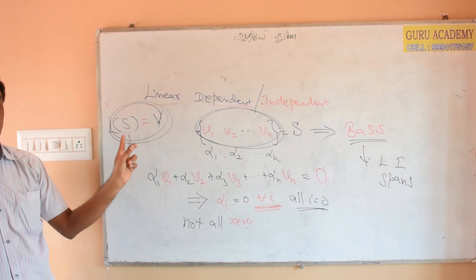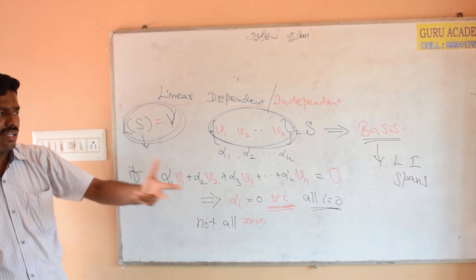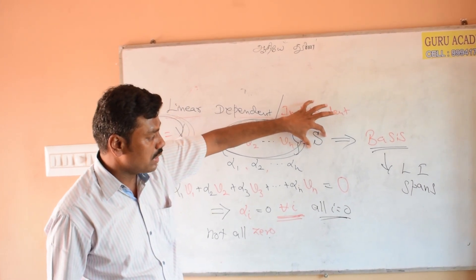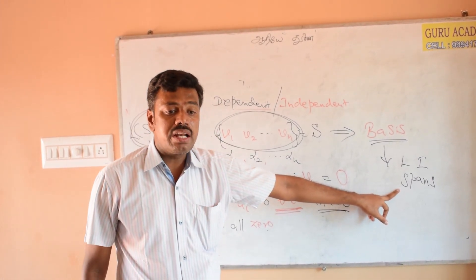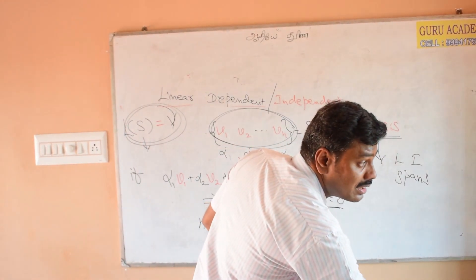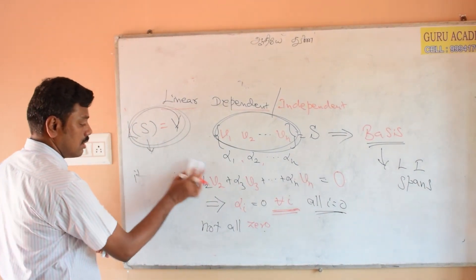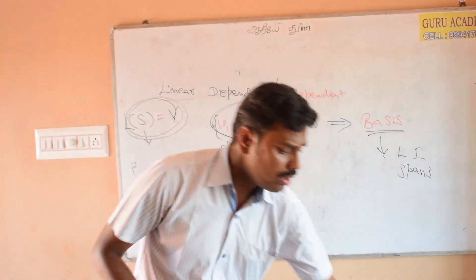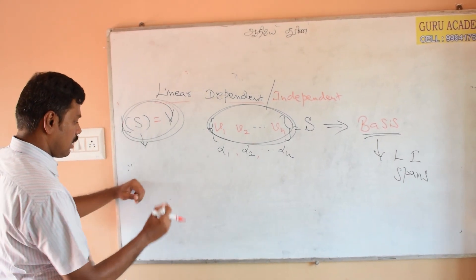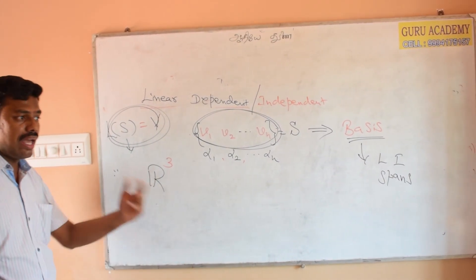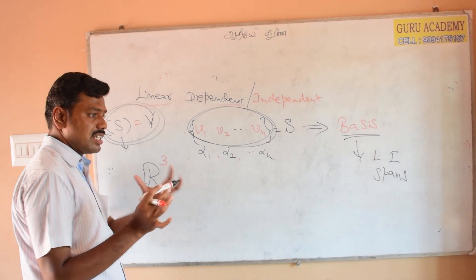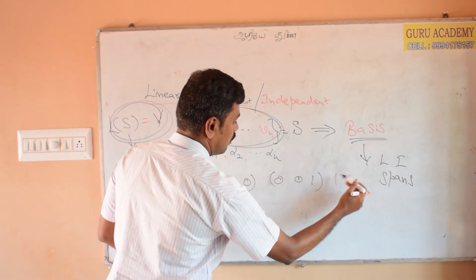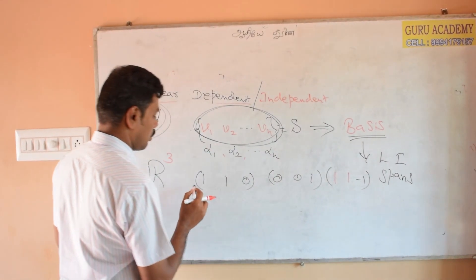This set is the basis. Basis is a subset that is linearly independent and spans. For example, consider R3. The elements are triples. We can choose vectors like (1, 1, 0), (0, 0, 1), and (1, 1, -1) — three elements in R3 — and check whether they form a basis.